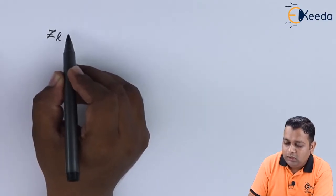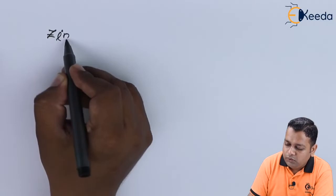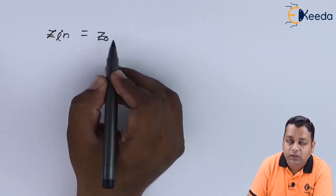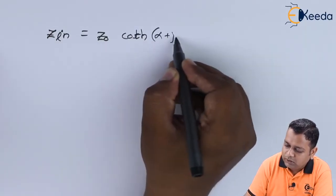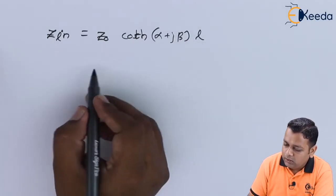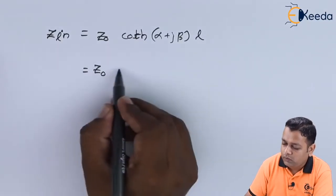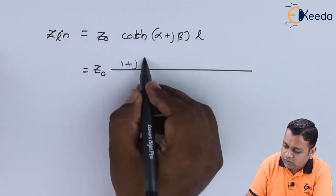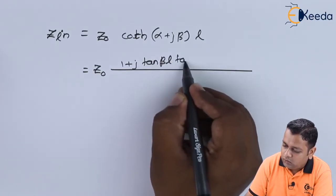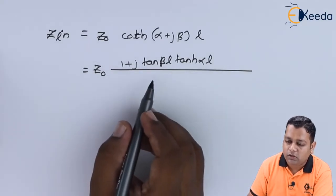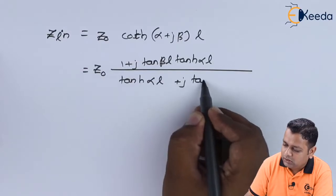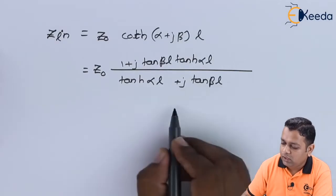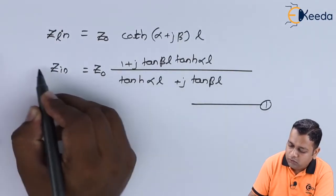In this situation, the input impedance in general for transmission line length L is given as the characteristic impedance Z₀ multiplied by the hyperbolic cotangent function of (α + jβ)L. This is expressed in the form Z₀ into the ratio where the numerator is 1 + j·tan(βL)·tanh(αL), and the denominator is tanh(αL) + j·tan(βL). Let this be denoted as equation number 1 for the input impedance Z_in.